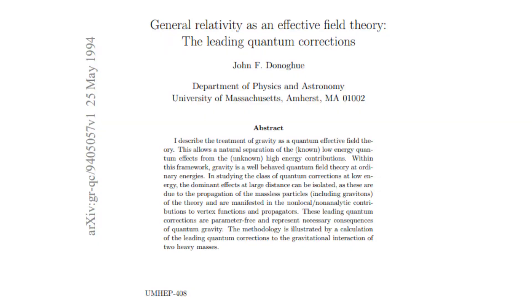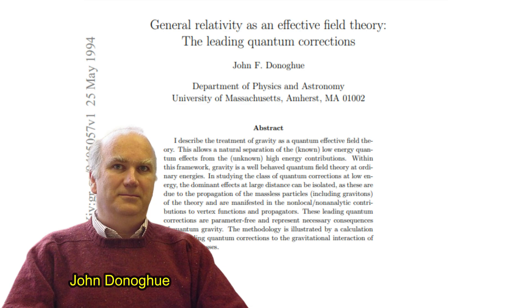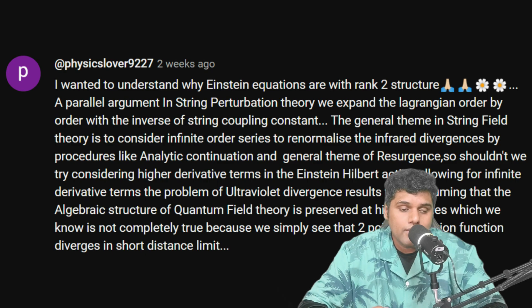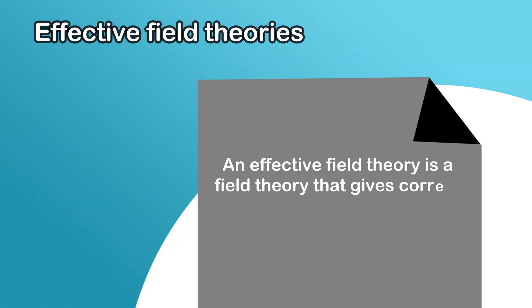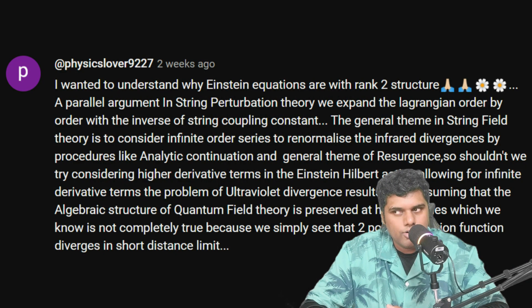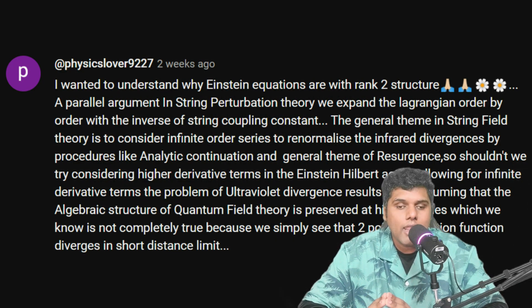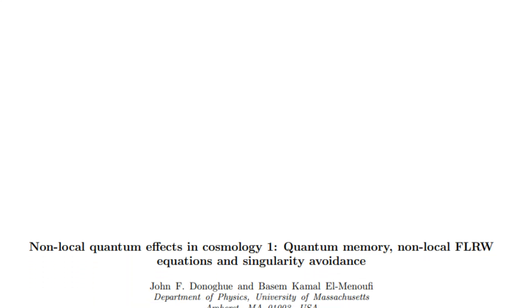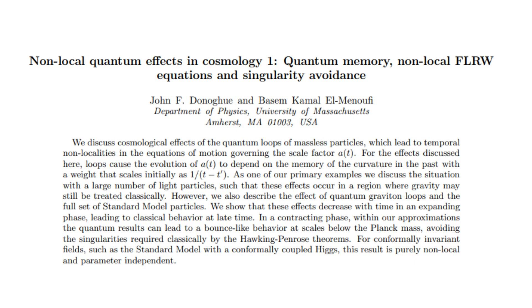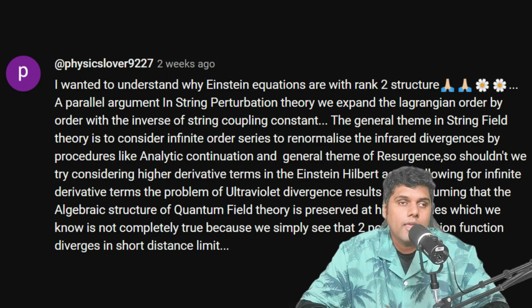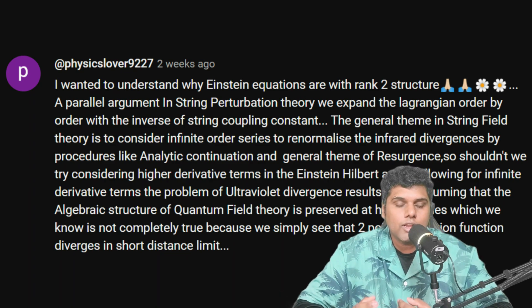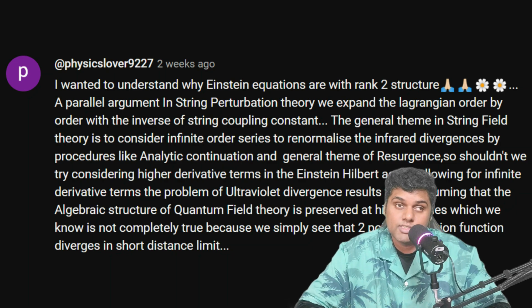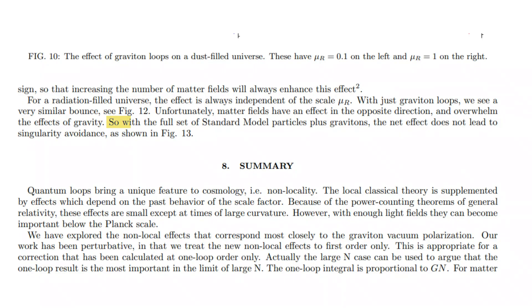I would encourage you to learn about the work of John Donahue, a theoretical physicist who did remarkable work in the mid-90s and more recently. He considered general relativity as an effective field theory, which allows you to add higher-derivative terms without worrying too much about renormalization. There was a paper by Donahue and a collaborator analyzing predictions of these effective field theories in the context of the early universe — they found they could avoid the Big Bang singularity in many situations, but if you include the full Standard Model, probably not.